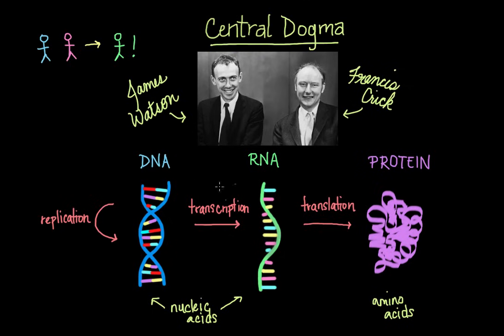Now, since DNA, RNA, and protein are linear polymers, this means that each individual unit or monomer is only attached to, at most, two other units. So say we have a monomer, which is just one unit, but they are connected in a series like this, which makes it a linear polymer. And this is the same for DNA, if each of these is a deoxyribonucleic acid; for RNA, if it's a ribonucleic acid; or a protein, which are just amino acids all connected in a linear polymer.